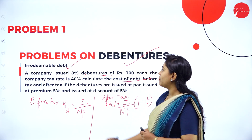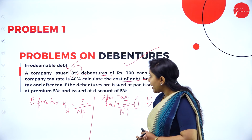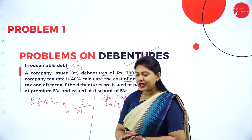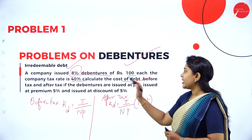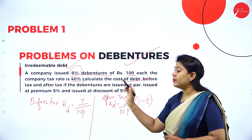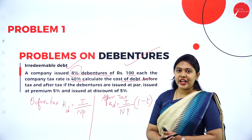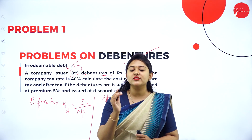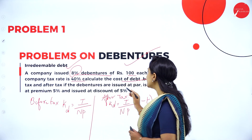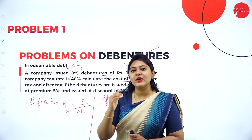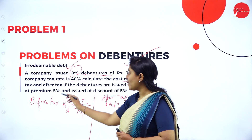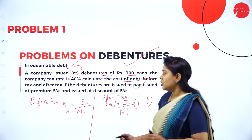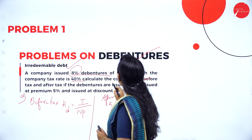A company issued 8% debenture, so 8% is the interest. The net proceeds is rupees 100. The company tax rate is 40%. Calculate the cost of debt before tax and after tax if the debentures are issued at par, issued at a premium of 5%, and issued at a discount of 5%. If the face value is 100 rupees and issued at 100 rupees, it is issued at par. If issued more than 100 rupees, that is premium; less than face value, that is discount.